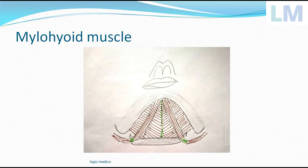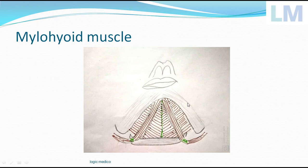This Mylohyoid muscle, what is it exactly? It is a flat triangular muscle. It is both of these triangular muscles, right and left side, joined together to form one partition which separates the oral cavity from exterior.